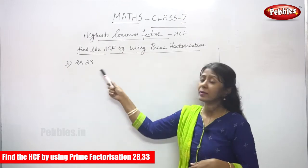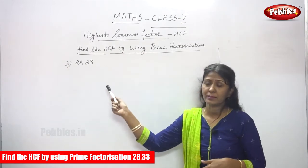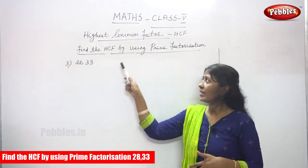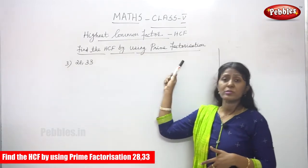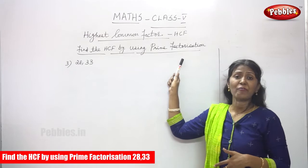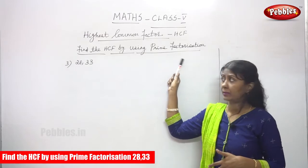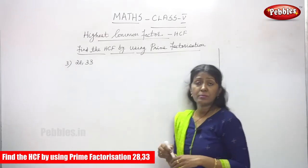The third sum is 28 and 33. You will find the HCF by using the prime factorization method. Let's start this one.